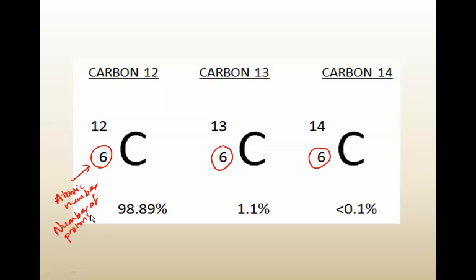In standard atomic notation, the atomic number, that is the number of protons, is written below the mass number. In this case, the mass number is 12. With carbon-13, the mass number is 13. And with carbon-14, the mass number is 14.